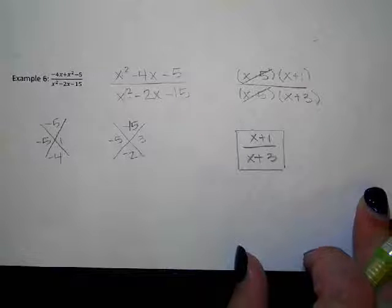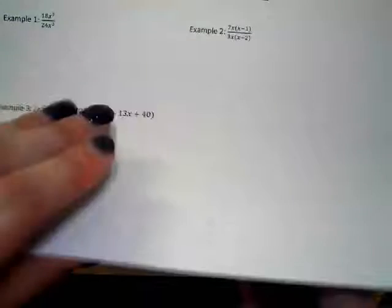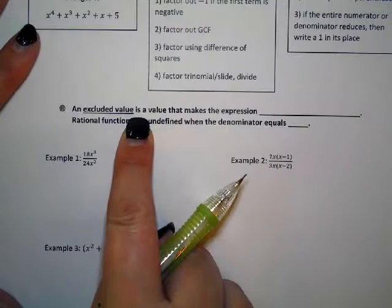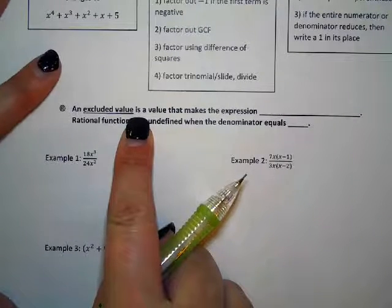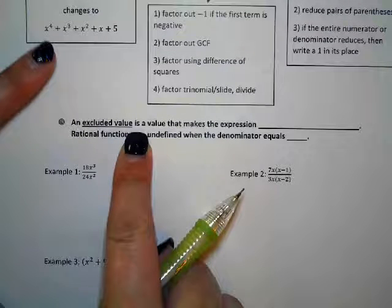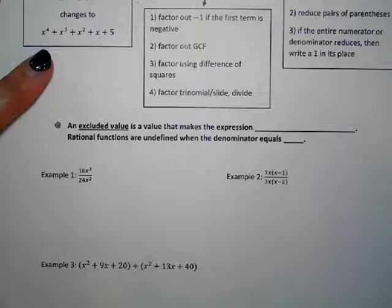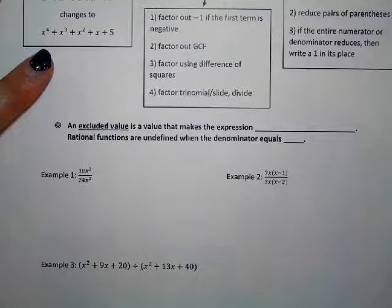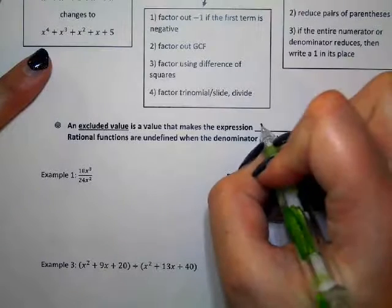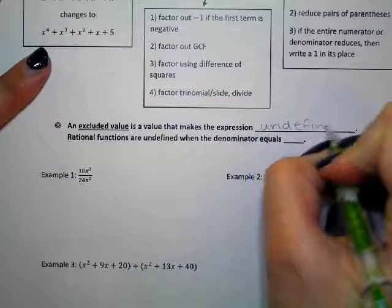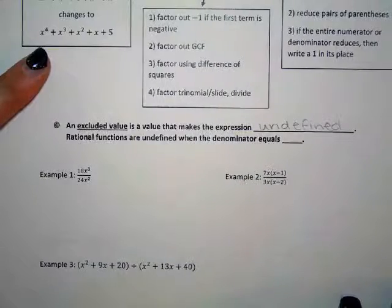Now we have to go back because we did not cover excluded values in the notes. An excluded value is a value that makes the expression undefined. An excluded value is a value that makes the expression undefined.